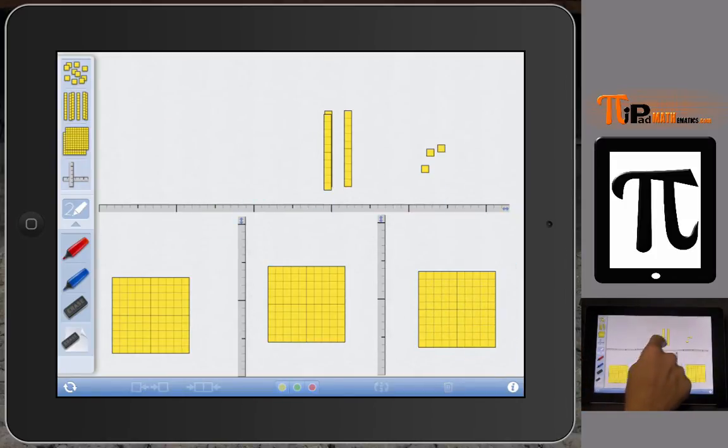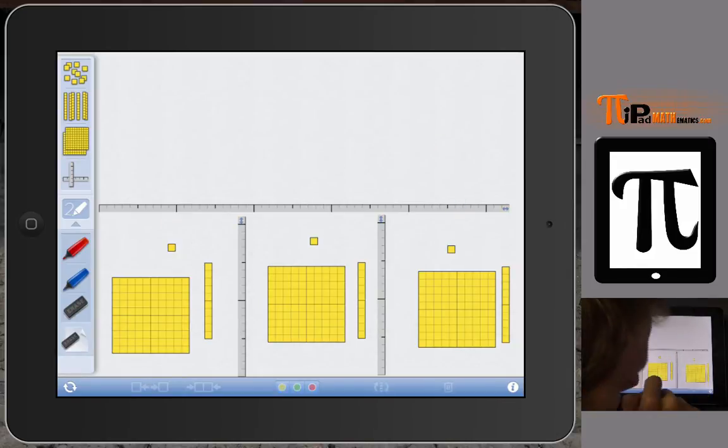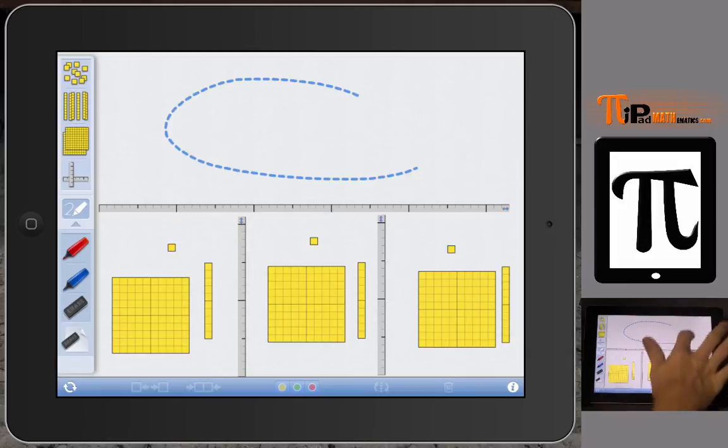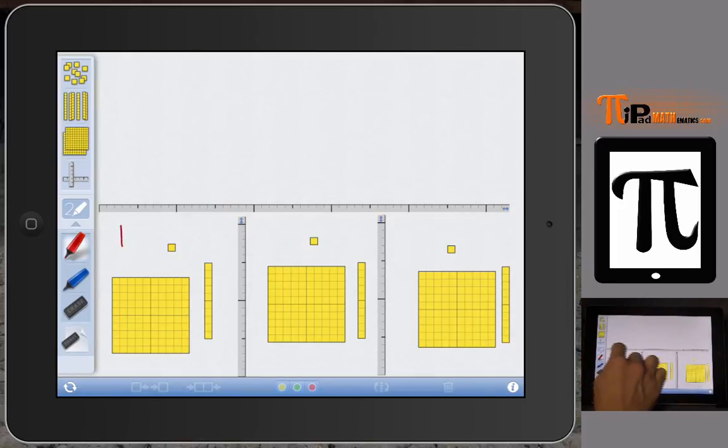And then one long will go here, one long will go here, and one long will go here. And then one unit will go here. And once we've divided and taken everything that we had to start with and divided it up into our three equal groups, then we can find out how many is in one group, and that becomes our answer, where we have 111. So 333 divided by 3 is 111.